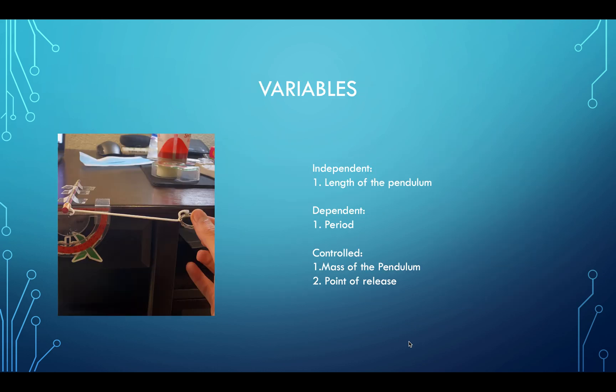We had different variables during the experiment. The independent variable was the length of the pendulum string. The dependent variable was the period, since it could change depending on the length. The controlled variable was the mass of the pendulum, in this case the ring, which was kept constant, and the point of release, which was marked slightly right below 10 degrees.